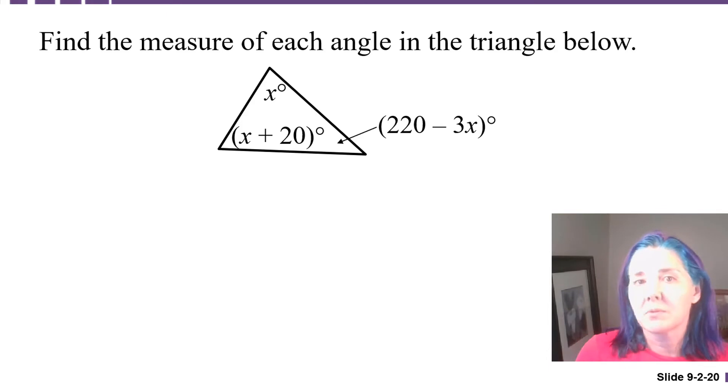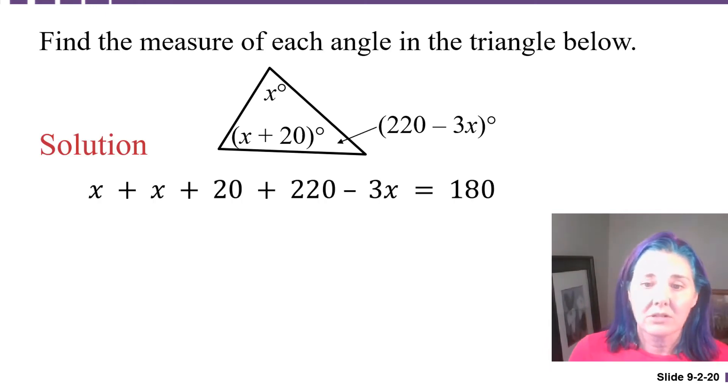Some of the problems that we're going to work in our class are going to give us a diagram, which is a triangle, and the angles inside the triangle will be marked, and we're going to be asked to find the measure of each angle. Here we have a triangle, one angle is marked x degrees, another is x plus 20 degrees, and another is 220 minus 3x degrees. Whenever you see that you're dealing with unknown angles inside of a triangle, you use the fact that the angles have to add up to 180. That will allow us to set up the equation: x plus x plus 20, plus 220 minus 3x, that's the sum of the three angles, is 180.